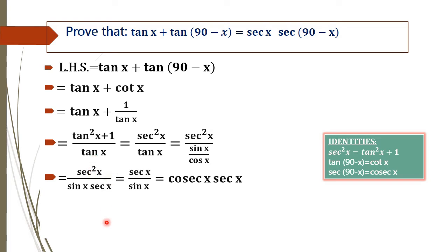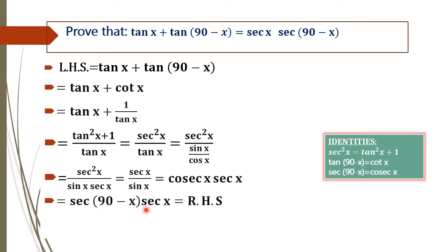By canceling sec squared and sec, we get sec x remaining. Now sin x can be expressed using 1 by cos x. We need to get the term sec of 90 minus x in order to complete our equation. We know that cos x equals sec of 90 minus x. So we get the RHS, that is sec x into sec of 90 minus x.